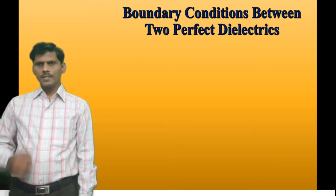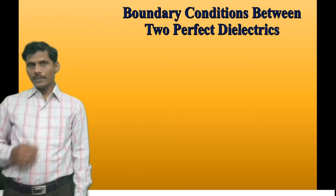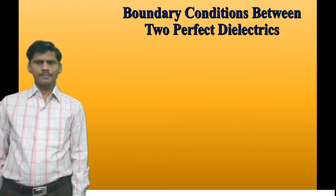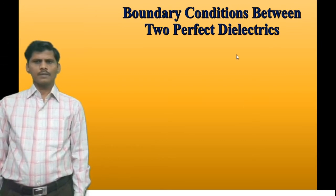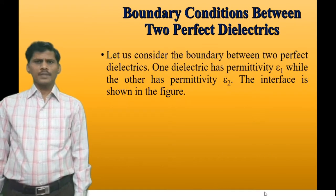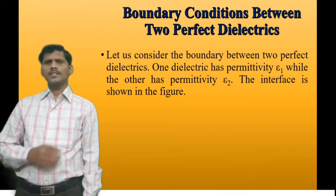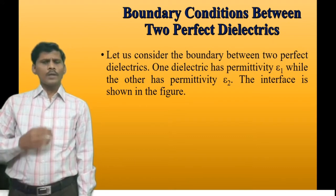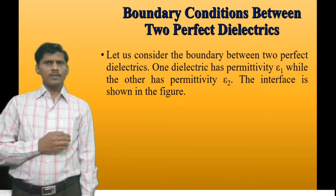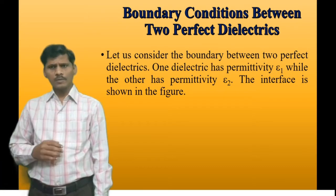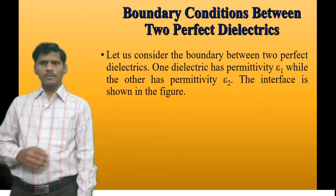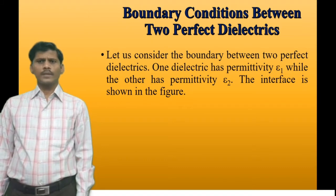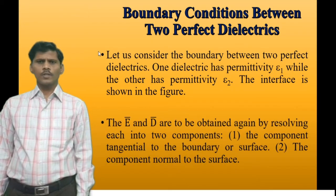The next boundary condition is the boundary between two perfect dielectric materials. Let us consider this boundary: one dielectric has a permittivity epsilon 1 and the other dielectric has permittivity epsilon 2. The interface boundary between the two perfect dielectric materials is shown in the figure.